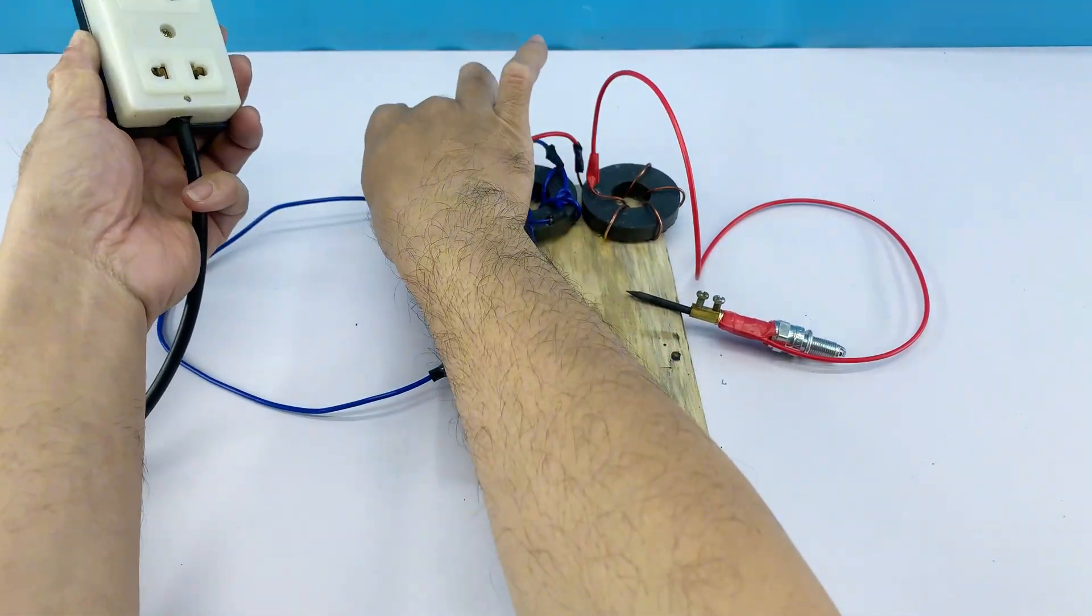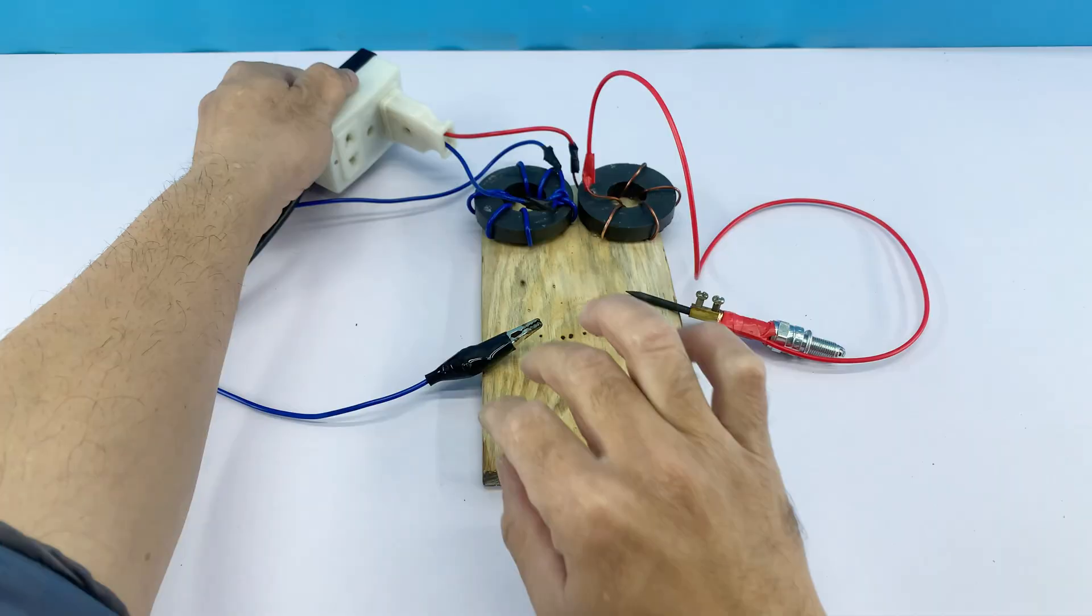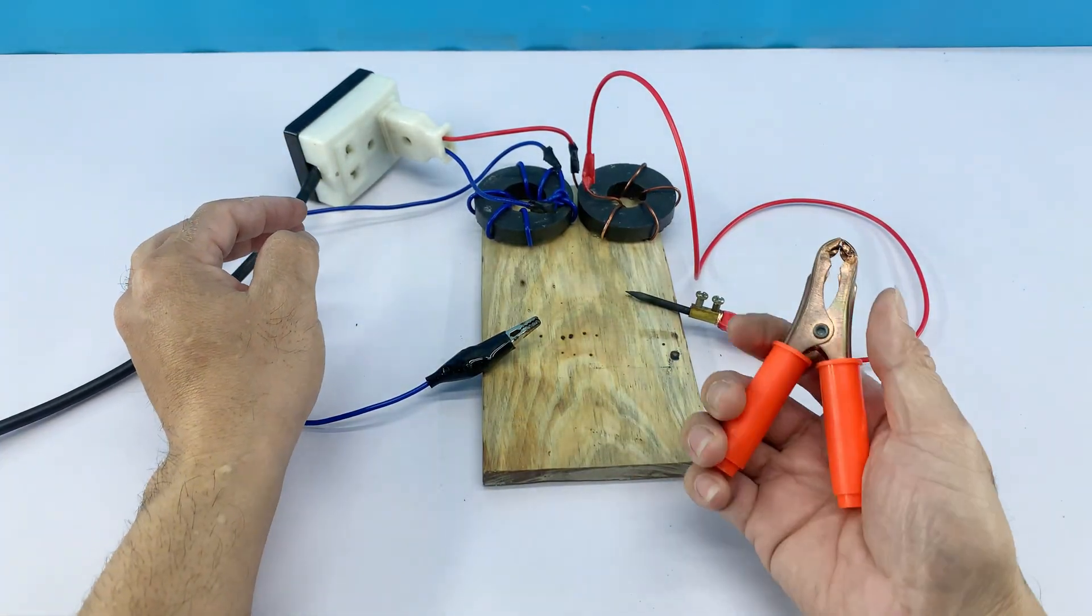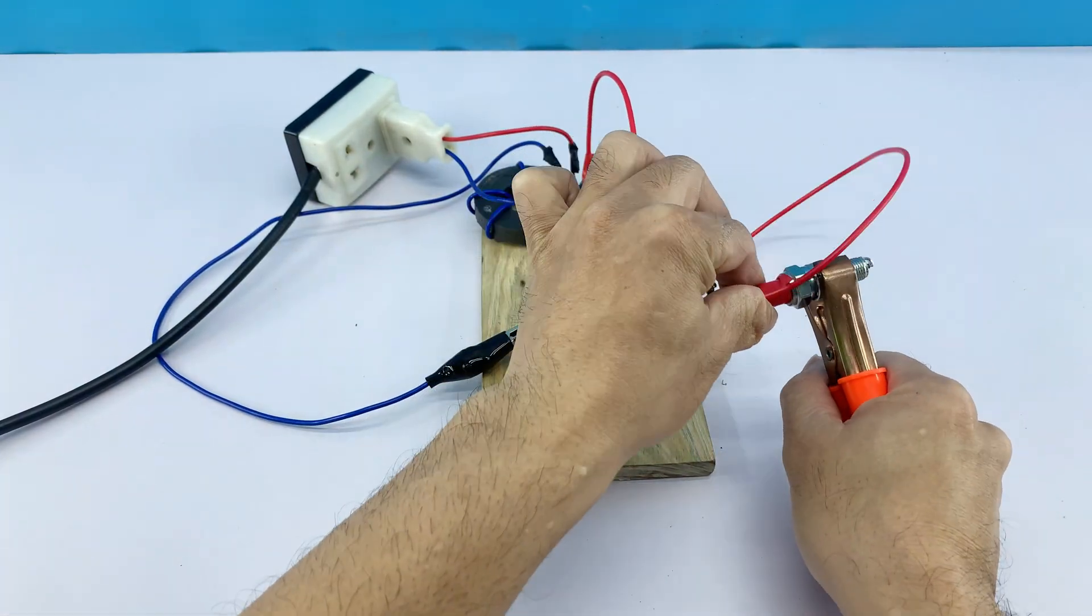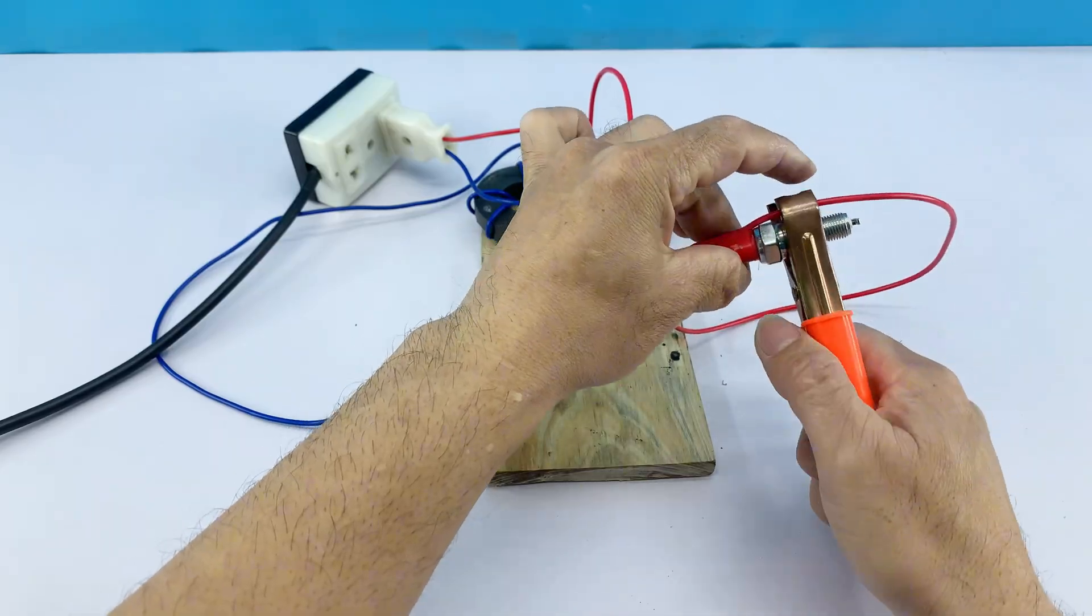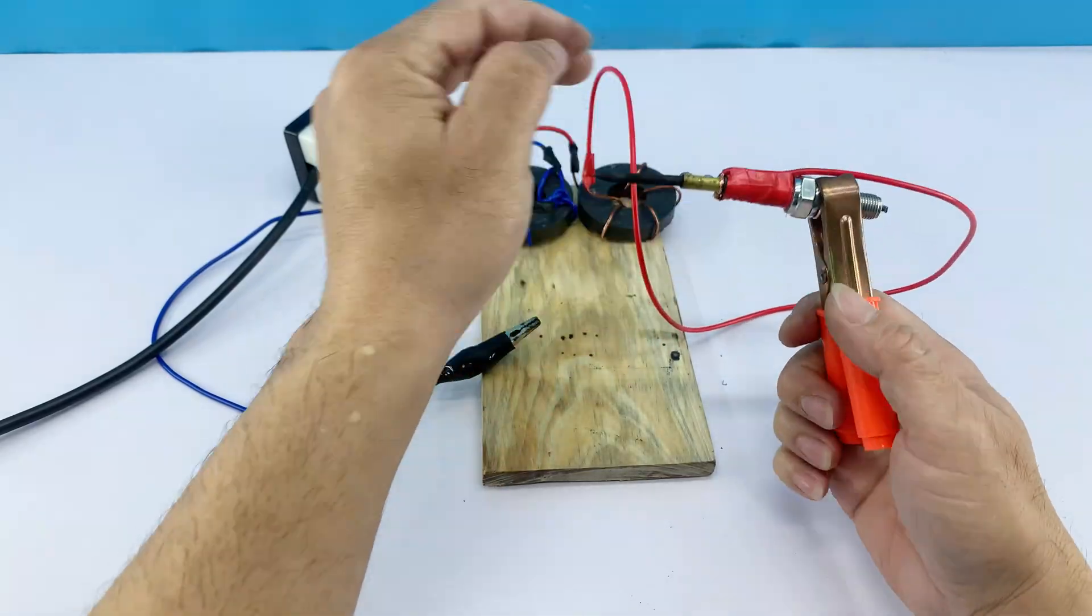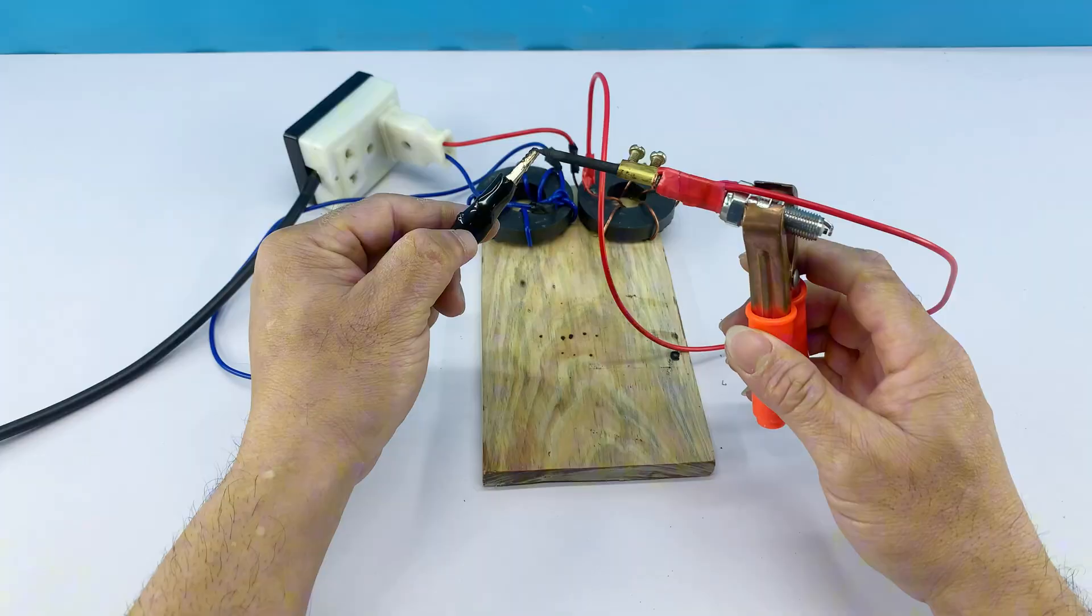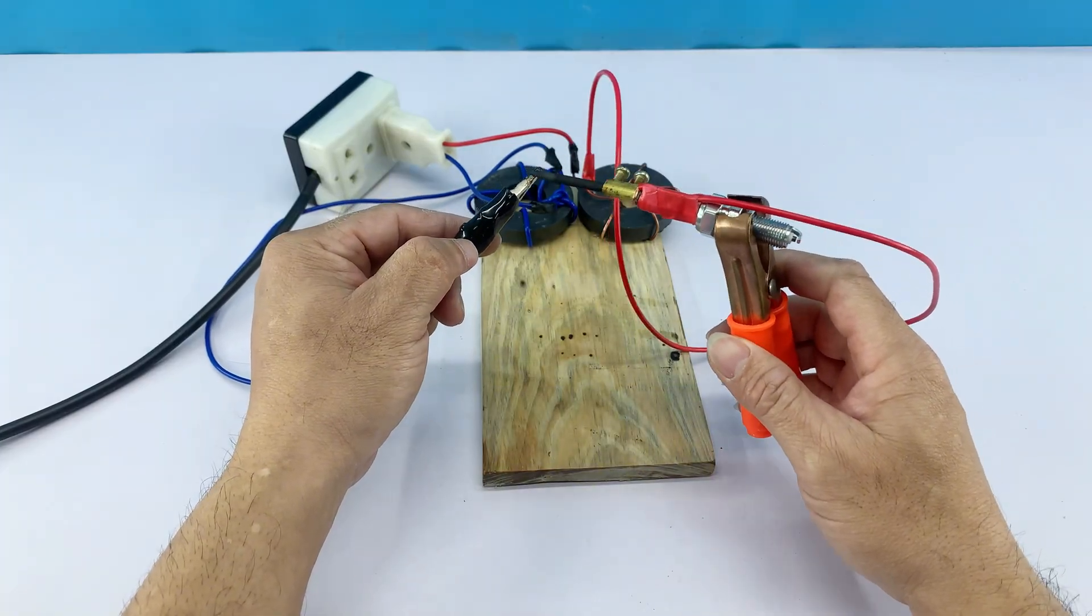With all the connections made, I'm plugging the main power cord into a wall outlet. This will supply the alternating current to our coil setup, creating the strong electromagnetic field needed to heat our carbon rod. I'll add a large alligator clip to make a handle for the soldering iron.